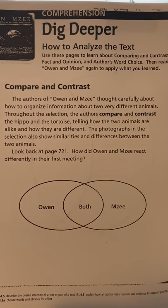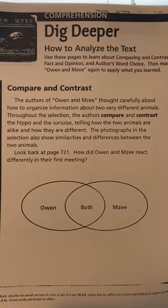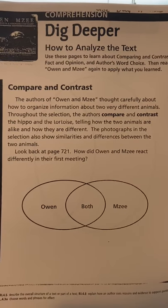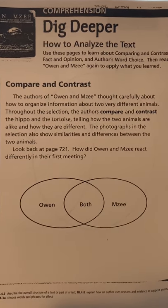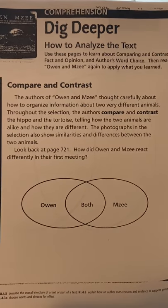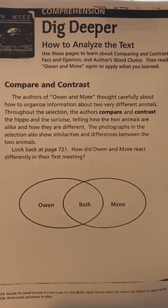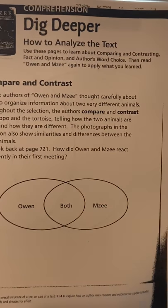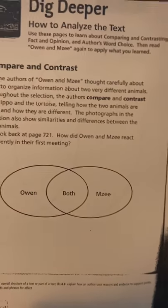The photographs in the selection also show similarities and differences between the two animals. Look back on page 721. How did Owen and Mosaic react differently in their first meeting?